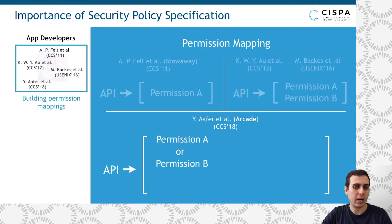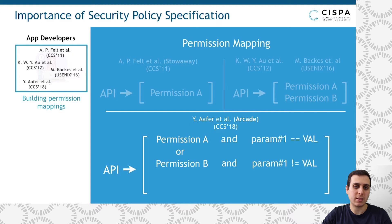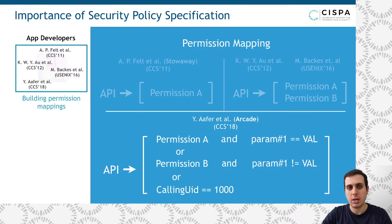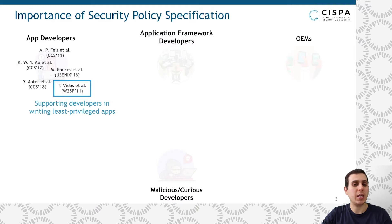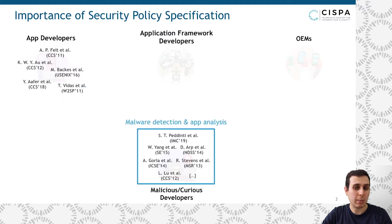Most recently, another work called Arcade by Afar et al. also used static analysis but proposed new dimensions, such as identifying the relation between the enforced permissions — whether they are enforced in conjunction or disjunction of each other. It also introduced path sensitivity, meaning that different permission sets are required for different execution paths, and it also considered the non-permission checks. With these permission mappings, the community became able to build tools, for example, for supporting app developers in writing least-privileged apps or detecting malware.